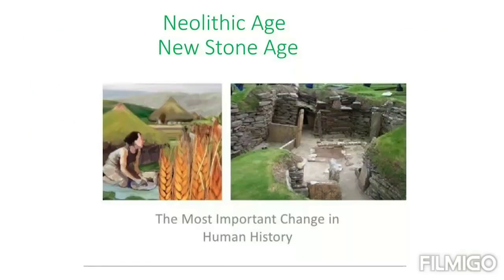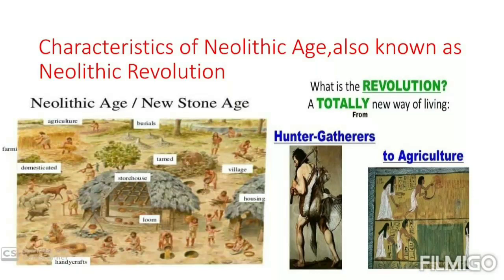We will study the Neolithic Age in detail because this is the final stage of cultural evolution and technological development. The Neolithic Age is also known as the Neolithic Revolution — this was the period in which early humans started leading a settled life and turned into farmers and herders, or producers, from wanderers, hunters, and gatherers. Thus, the Neolithic Age can be defined as the age of domestication of animals and plants.